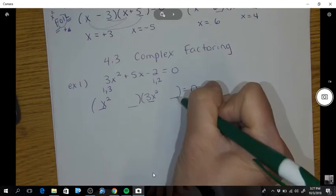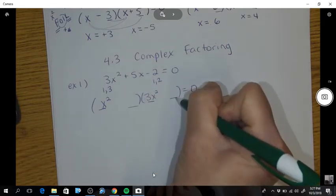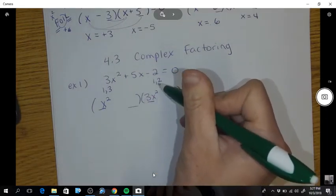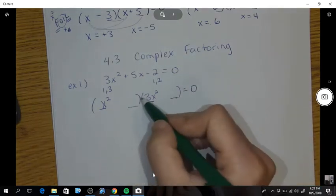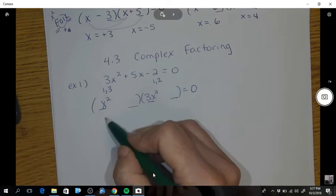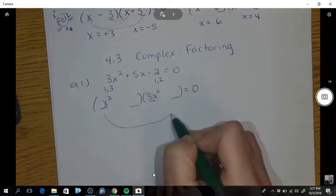Then I looked into my last spots, they have to multiply to a negative 2. So my only options are 1 and 2. So where do I put the 1? Do I put the 1 here and the 2 here? So if I did that, let's say if I put the 1 here, that would make 1x squared.